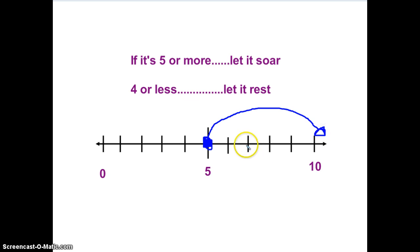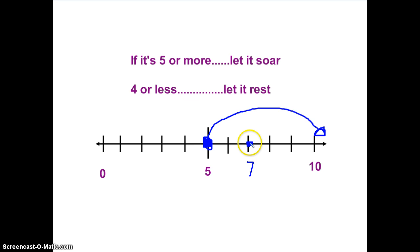So that means if the number is seven right here, and we're over here — because seven is five or more — the number is going to soar until it gets to ten. So we're going to soar this number to ten, seven to ten.